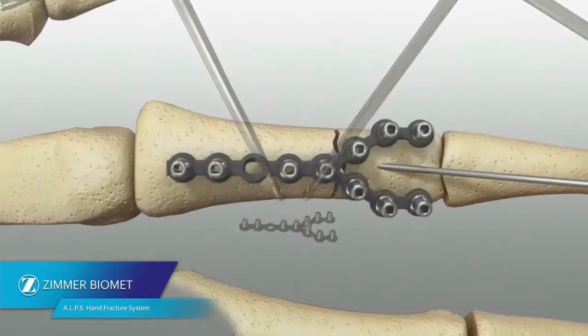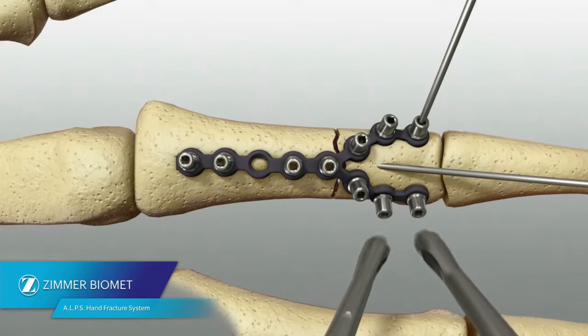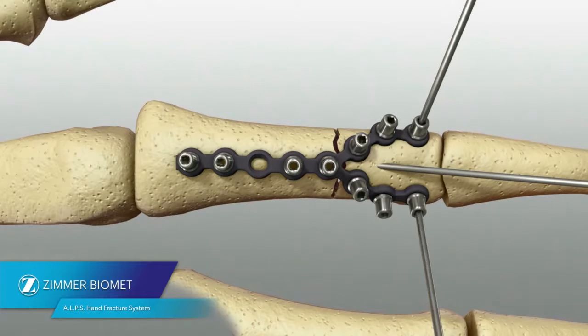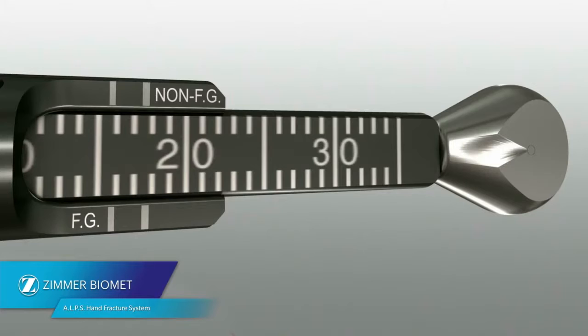Next, achieve temporary fixation of the plate to the bone using K-wires or reduction clamps. Drill through the fast guide using the appropriate drill bit. Use the bone depth gauge to measure the hole and determine the appropriate length screw.